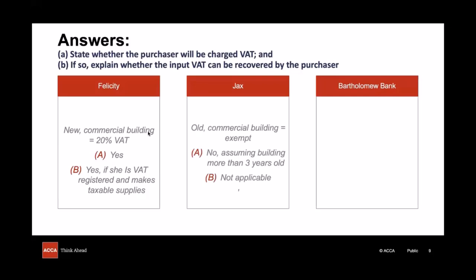What about Jax? Jax had bought a second-hand warehouse to use for manufacturing air conditioning units — sounds like they're making taxable supplies, but would VAT be charged in the first place on the supply of this warehouse? Well, it rather depends on how old the second-hand warehouse is. Remember that our default position is that the supply of land or buildings is exempt from VAT, and the exception that could be relevant here is the one where we charge standard rated VAT on the sale of new commercial buildings. This warehouse is a building, it's being sold, it is commercial as opposed to residential, but is it new? As it's second-hand it seems more likely that this is not an exception to the general rule, and so the sale will be exempt from VAT. That then means that there is no input VAT to be recovered on this sale.